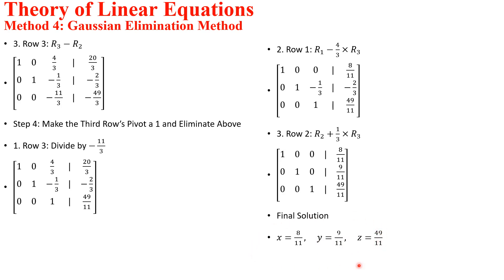So we have x equal to 8 over 11, y equal to 9 over 11, and z equal to 49 over 11. When you compare this solution with the previous solutions, you'll see that the answers are the same. Basically, what we have done is transform the entire augmented matrix into row echelon form to get the solution to the system of linear equations.